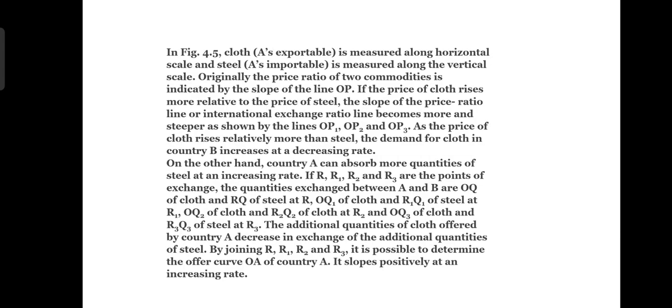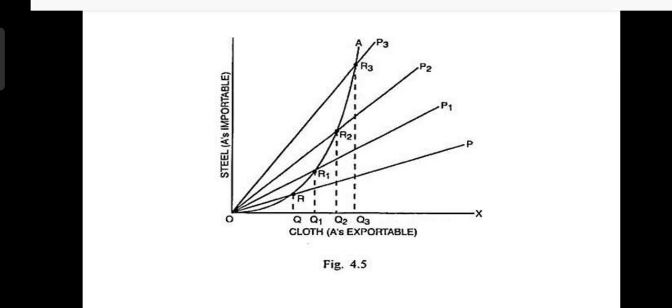What happens is: if the price of cloth rises more relative to the price of steel, the slope of the price ratio line, or international exchange ratio line, becomes more and more steeper, as shown by the lines OP1, OP2, and OP3. It is because as the price ratio of cloth to steel increases, the price ratio line becomes steeper.